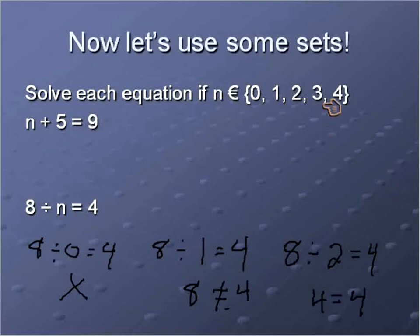We could continue on and substitute 3 in there. 8 ÷ 3 is 8 thirds and that's not equal to 4. And then 4 in there, 8 ÷ 4 = 2 so that's also not correct. But once we find, sometimes when we find the correct solution, we can stop. But in some cases you'll want to continue on because there may be multiple correct solutions. But in this case, there is one solution and the solution is 2.